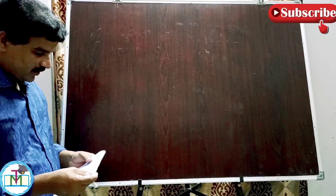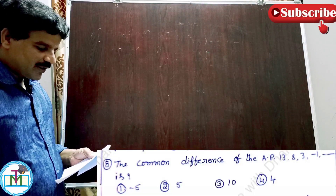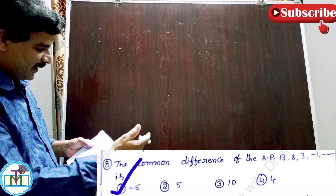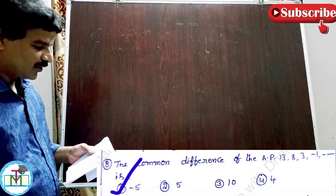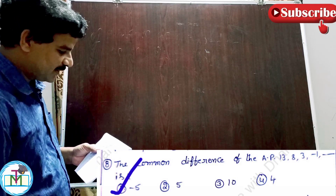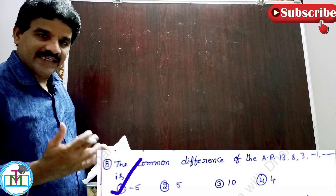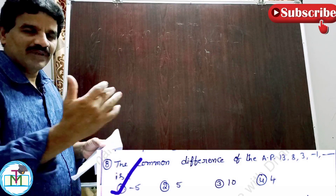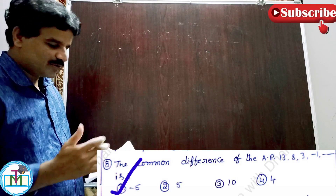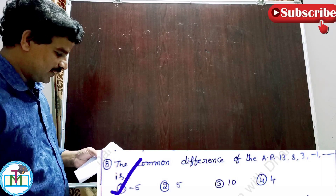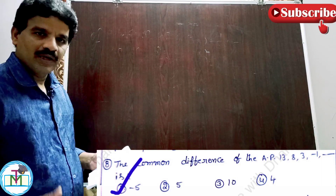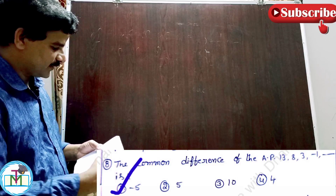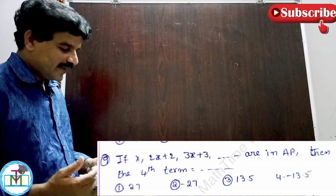Question number 8: the common difference of the arithmetic progression 13, 8, 3, minus 1, and so on. Common difference D equals T2 minus T1, i.e., second term minus first term. Here 8 minus 13 equals minus 5. Therefore option 1, minus 5, is the right answer.